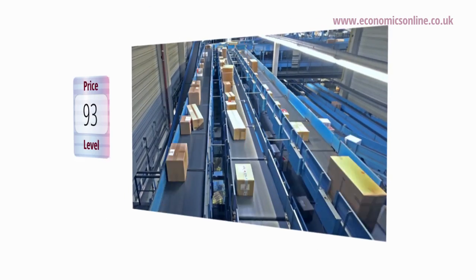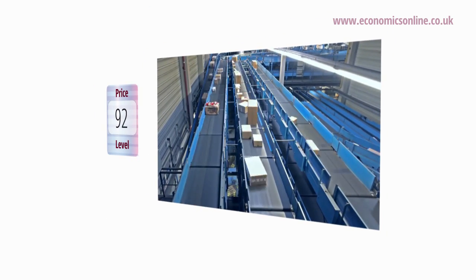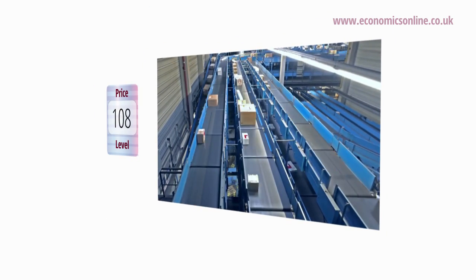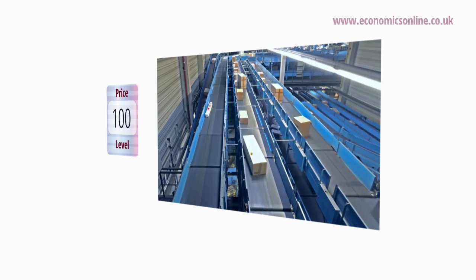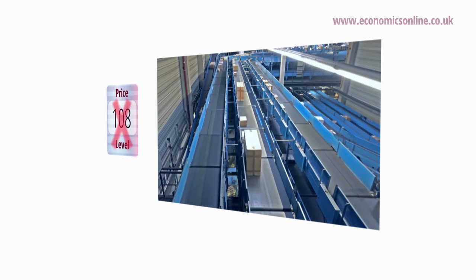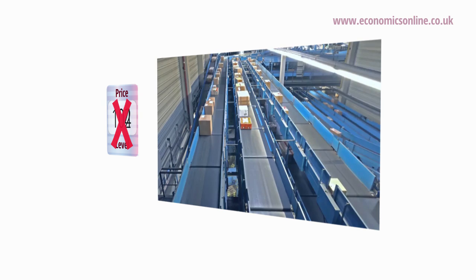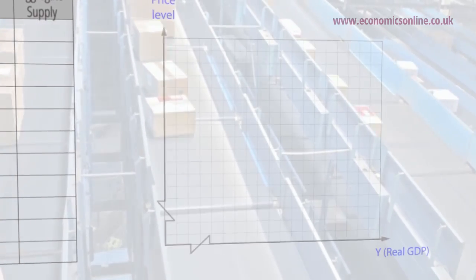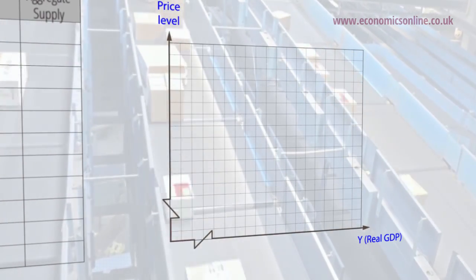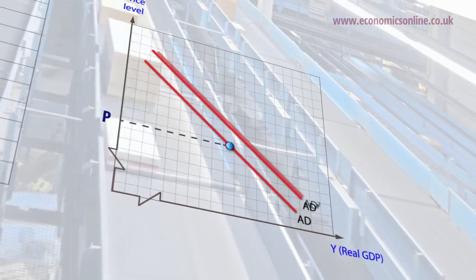In terms of aggregate supply, AS, the relationship between it and the price level is more complex and controversial. Historically, classical economists assumed that a country's output was not determined by the price level, which they regarded as a nominal value, because they argued nominal values cannot affect real values such as output and employment. Graphically, the AS curve would be vertical.